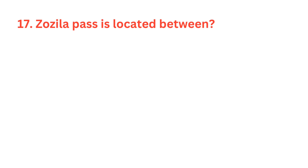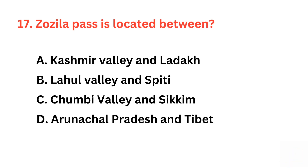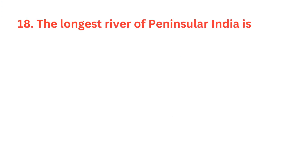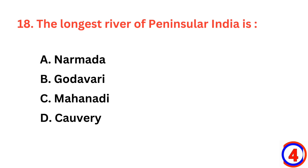Zozila Pass is located between? The correct answer is option A, Kashmir Valley and Ladakh. The longest river of peninsular India is? The correct answer is option B, Godavari.